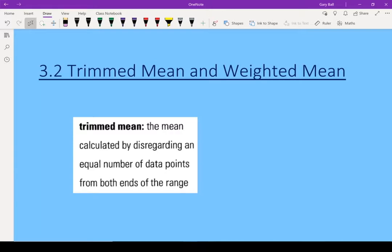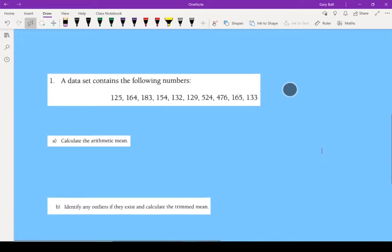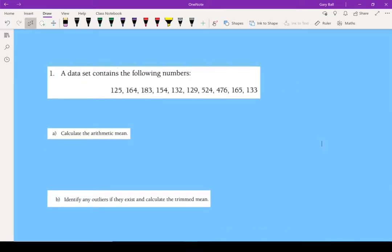But let's do an example so I can show you what I mean. Here we've got a data set. There's a whole bunch of numbers in there. There's a couple in there that are really quite large. So the first step is to calculate the arithmetic mean. That's just your regular mean, your average.